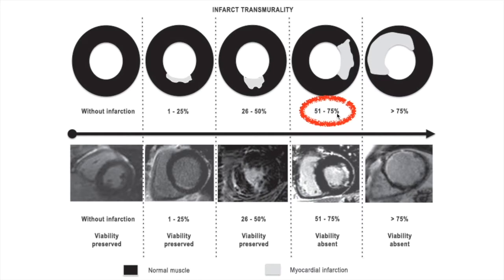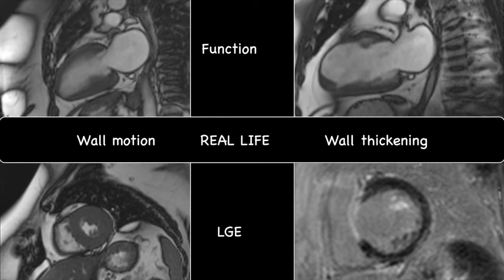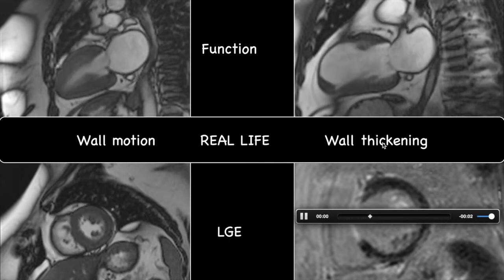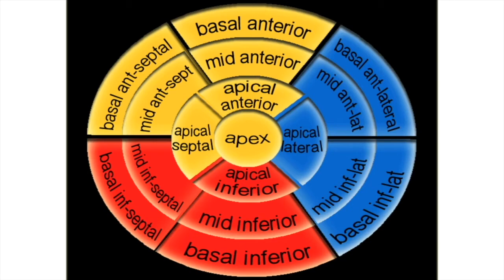Segments which are akinetic with 51–75% infarction are non-viable, while segments which are mildly hypokinetic with this degree of delayed enhancement are considered viable. In summary, viability assessment is a combination of wall motion abnormality, late gadolinium enhancement imaging, and wall thickening and thickness at end diastole. It is important to mention the status of each segment so that adequate information is available for the clinician. A 17-segment model is utilized when reporting these cases.